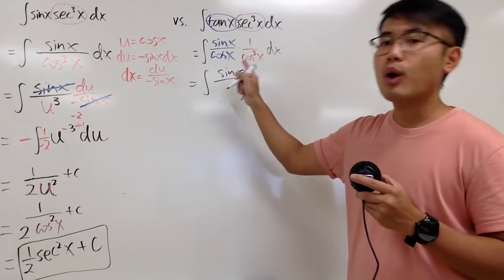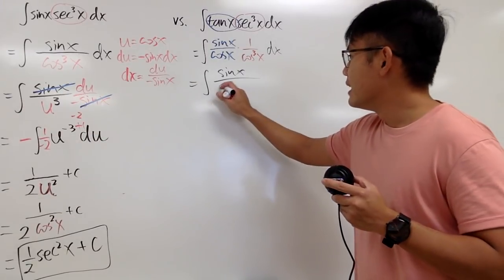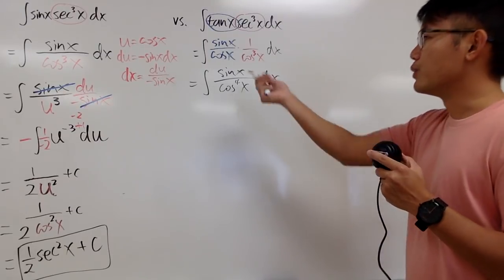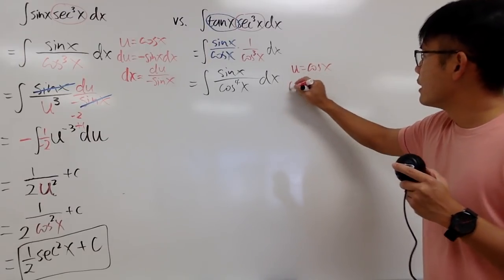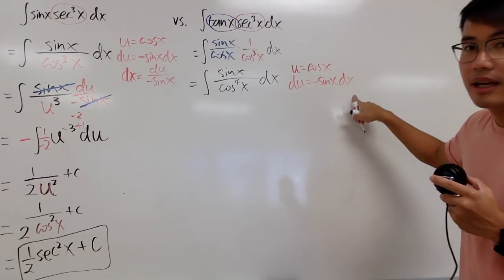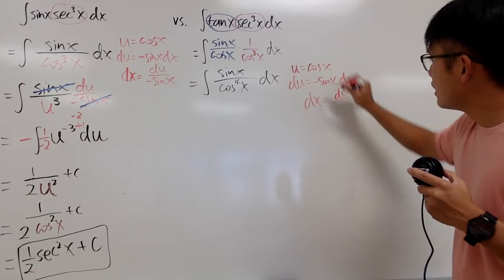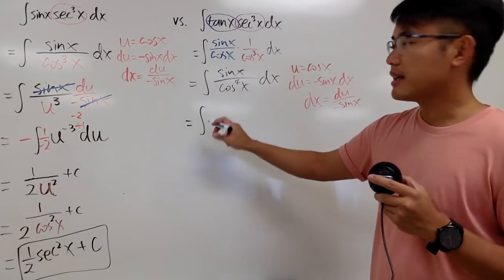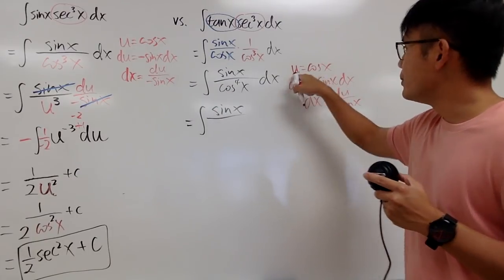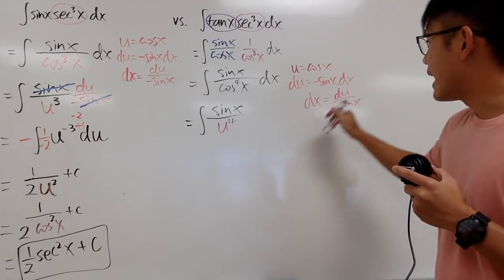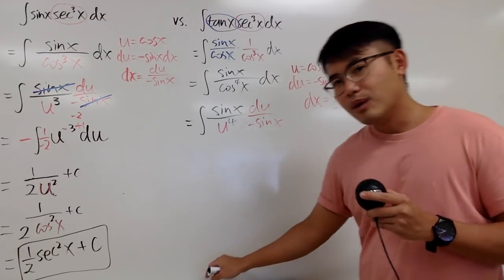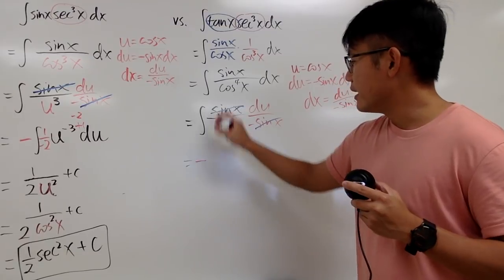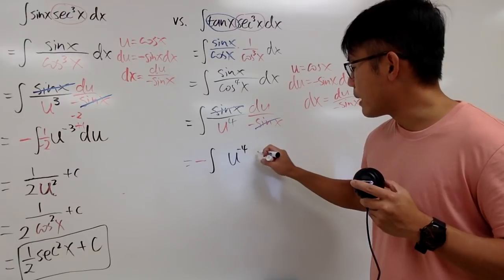These are actually very similar — the integral now has sine x on top and cosine to the fourth power on the bottom, just one more power compared to the earlier one. We do the same substitution: u equals cosine x, du equals negative sine x dx, so dx equals du over negative sine x. Once again, the sine x terms cancel each other out nicely.